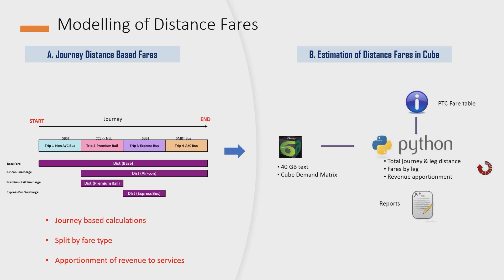We move on to the modeling of fares. The public transport fares in Singapore are calculated based on distance traveled. The calculation of fares is actually very resource intensive — we need to account for different fare types among the services. After getting the revenue, we need to apportion it back to individual services. To do this, we created a revenue model in CUBE. We re-run the assignment for all the OD paths and in the process generated 40 gigabytes of print files or journey records. We passed these to an external process developed in Python to calculate the fares as well as apportionment, and reports are generated by line and by service level.